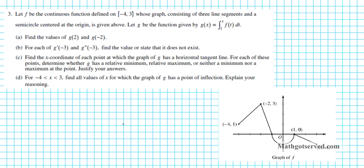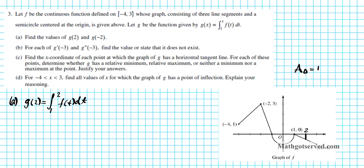Let's start off by looking for g(2). g(2) is what you get when you input 2 for x in this function, so it's going to be the integral from 1 to 2 of f(t) dt. We compute that using the graph of f. We know that the definite integral represents the area between the curve and the x-axis on the specified domain, so we're looking for the area from 1 to 2. It's going to be a negative area since it's beneath the x-axis. We can see that we have a triangle, so we're going to use elementary geometry. The area of a triangle is one-half base times height.